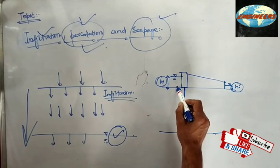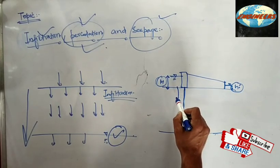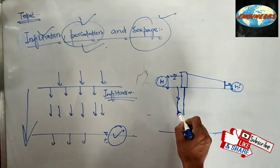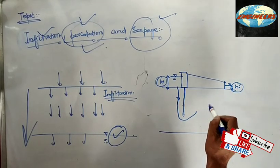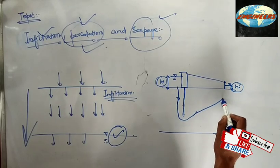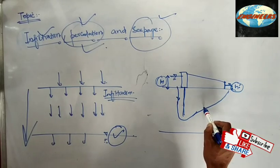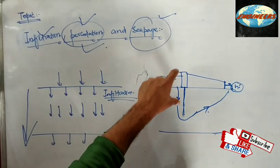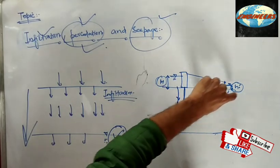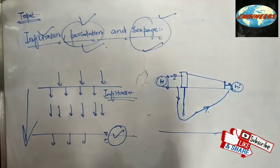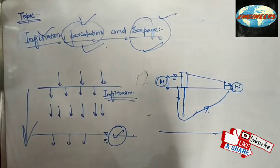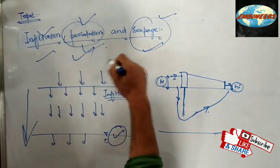The water will show seepage — it will come down along the sheet pile, then move maybe upwards if there are more sheet piles. So what I mean to say is: it can move vertically downwards, it can move horizontally, and it can even move horizontally upwards. That is what seepage is. Hope you enjoyed this short video about infiltration, percolation, and seepage.